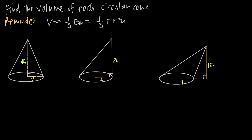When we talk about the area of the base B, since the base is a circle, we're talking about the area of a circle. So we can make the substitution πr² for B, since the area of a circle is always πr². So more often we're going to be using this formula: one-third πr²h, where r is the radius and h is the height.